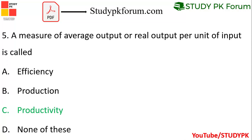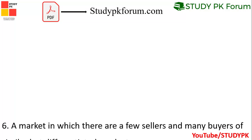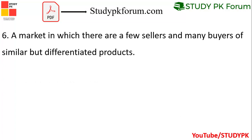Question 5: A measure of average output or real output per unit of input is called — efficiency, production, or productivity? Productivity is the right answer, option A.